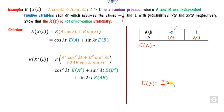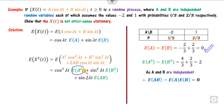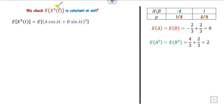Variable A takes values −2 with probability 1/3 and 1 with probability 2/3. So E[A] = (−2)(1/3) + (1)(2/3) = 0. Similarly, B has the same distribution, so E[B] = 0. E[A²] = (4)(1/3) + (1)(2/3) = 2. Since A and B are independent, E[AB] = E[A]·E[B] = 0. Substituting these values, E[X(t)] = 0, which is a constant for all values of t. So we cannot disprove stationarity from the mean alone; we must check E[X³].